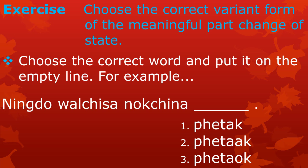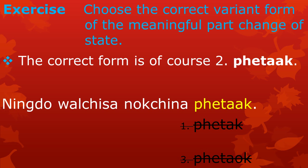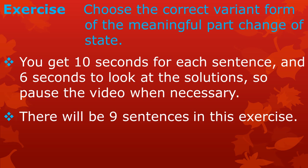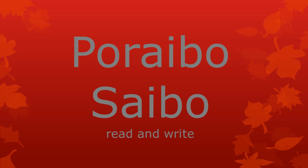For example: NINGDO WALCHISA NOKCHINA ___. Under the line you see three words: PETAK, PETAK, and PETOK. The correct form is number two, PETAK. You get ten seconds for each sentence and six seconds to look at the solutions, so pause this video when necessary. There will be nine sentences in this exercise.